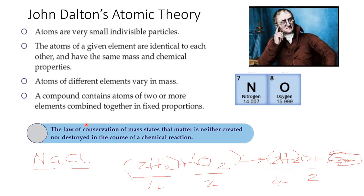A lot of John Dalton's theory was proven to be not entirely accurate based on experimental evidence, but it was a start — a start on the discovery and further refining of the idea of the atom. Like all scientific ideas, they evolve based on current observation and experimentation, and this really is the cornerstone of science.